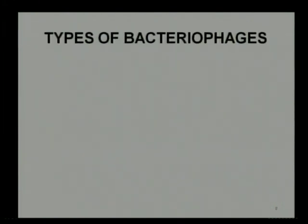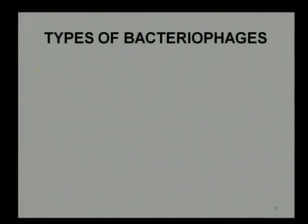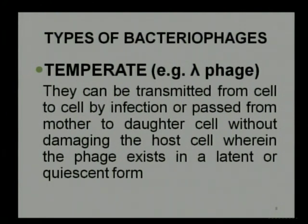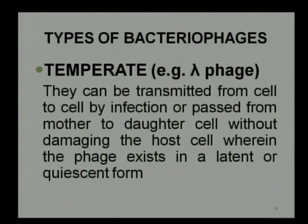On the basis of their life cycle, viruses are mainly showing two types of growth pattern. Bacteriophages can be divided into two parts. One is known as the temperate phage, and the typical example of such a temperate phage is the lambda phage.